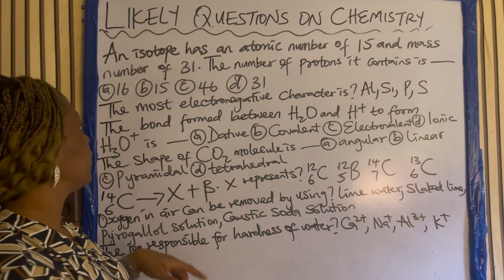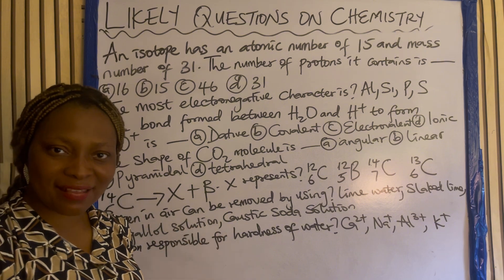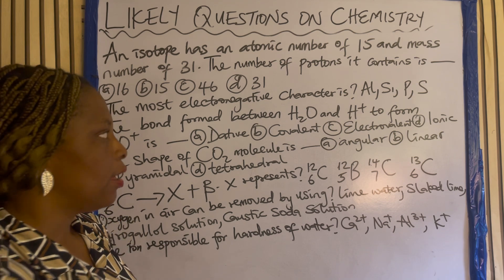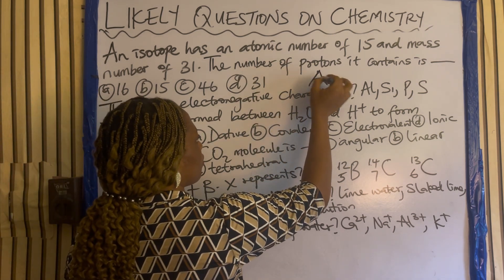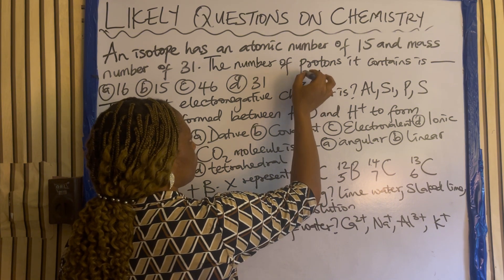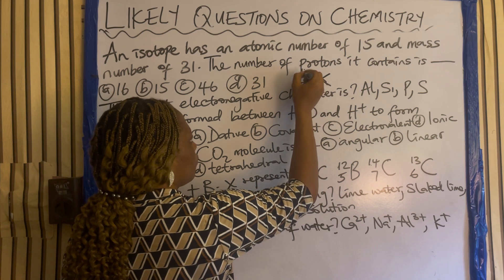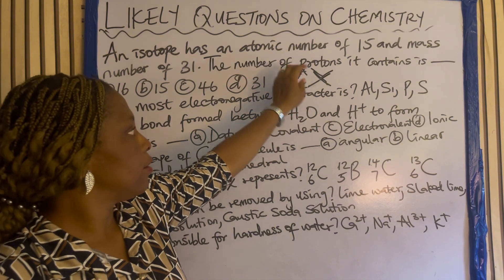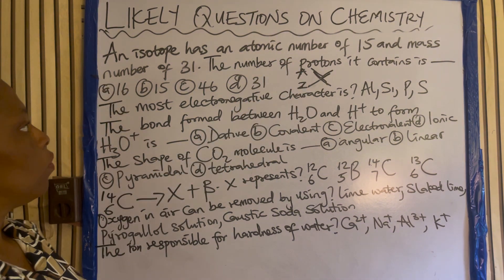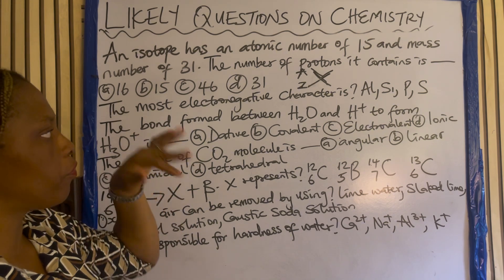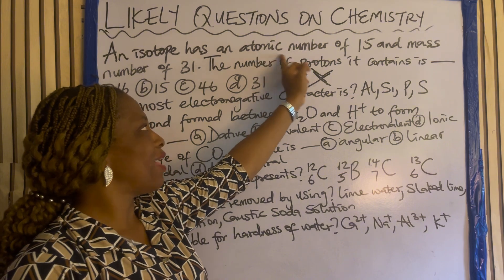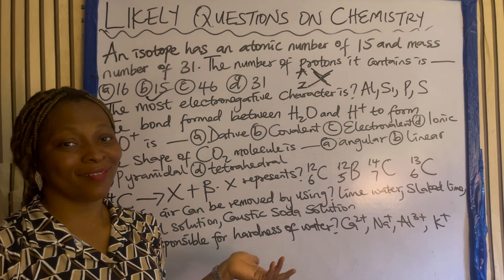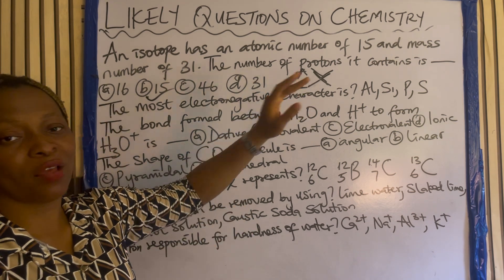An isotope has an atomic number of 15 and mass number of 31. The number of protons it contains is? Atomic number is the same thing as proton number. Z is atomic number and A is mass number. If the atomic number is 15, then the number of protons is 15. Some of them you don't even need to solve — just know that atomic number is the same thing as proton number.